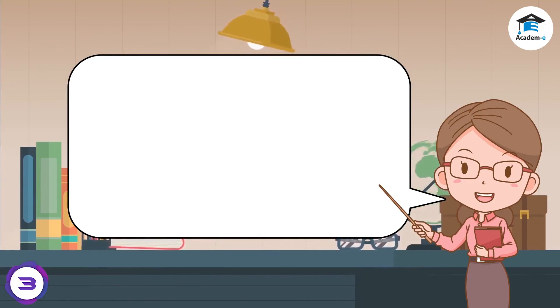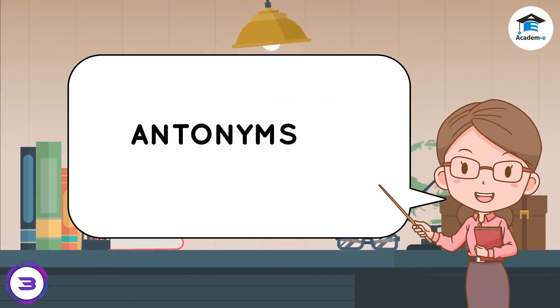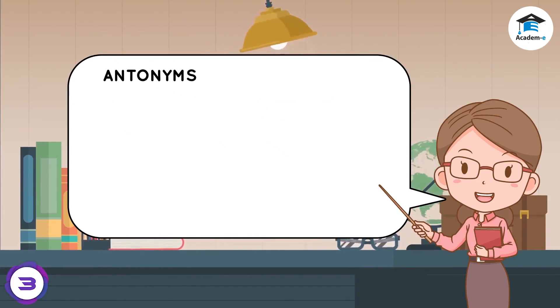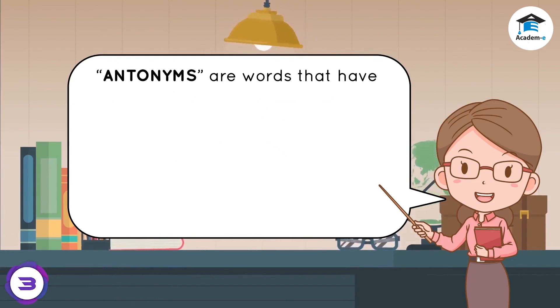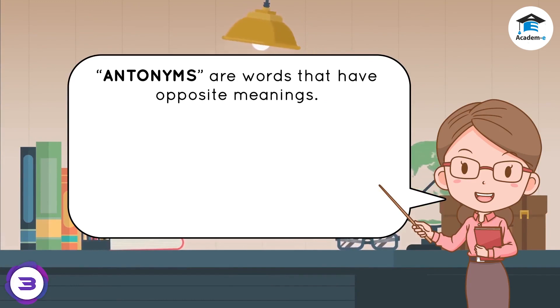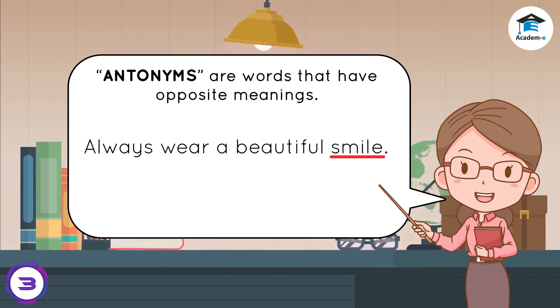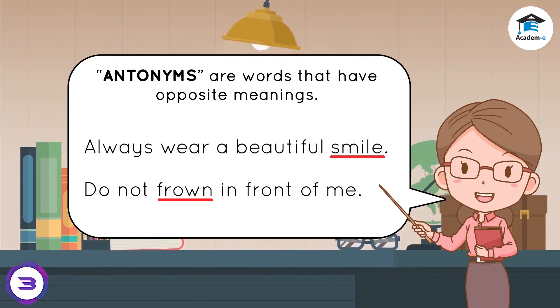Now, let us talk about antonyms. What is an antonym? Antonyms are words that have opposite meanings. Let us take a look at the following example: 'Always wear a beautiful smile. Do not frown in front of me.' The words 'smile' and 'frown' have opposite meanings.